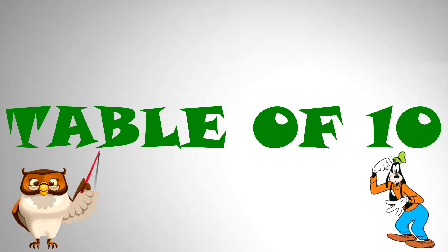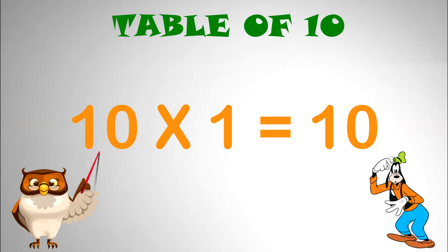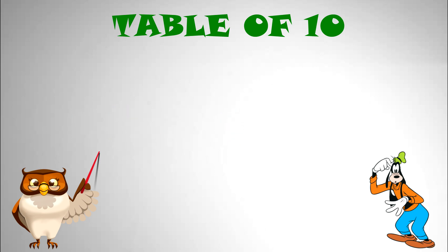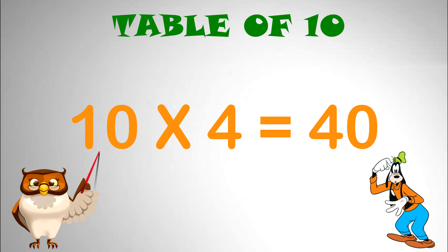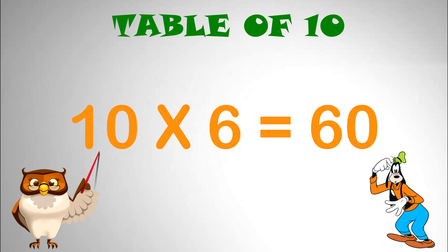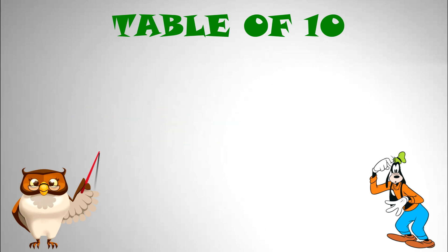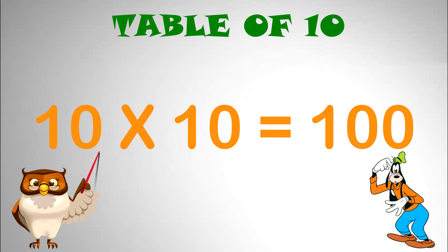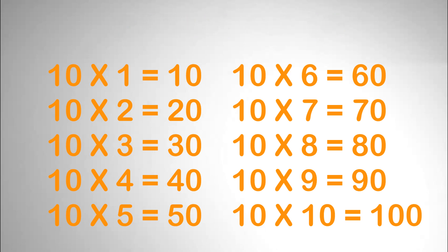Table of 10. 10 x 1 equal to 10. 10 x 2 equal to 20. 10 x 3 equal to 30. 10 x 4 equal to 40. 10 x 5 equal to 50. 10 x 6 equal to 60. 10 x 7 equal to 70. 10 x 8 equal to 80. 10 x 9 equal to 90. 10 x 10 equal to 100.